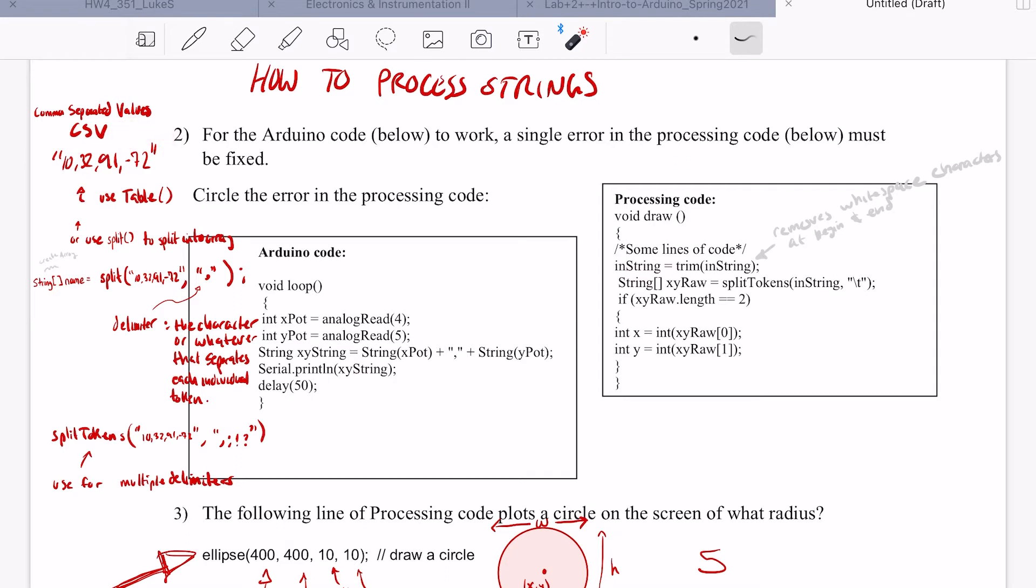So if we want to analyze the individual values or tokens in a string that's separated by commas, we can use different functions that processing has, but split is one that's very helpful. Basically, it'll go through the string and it'll split up the string into individual tokens based off of the delimiter you specify.